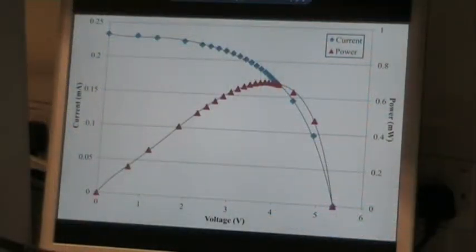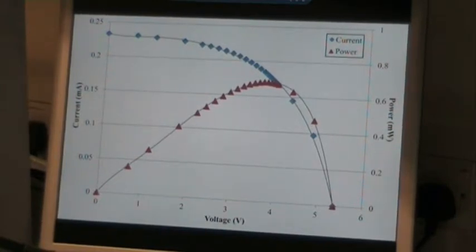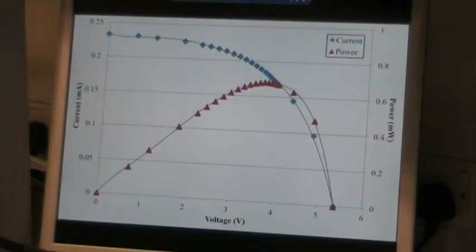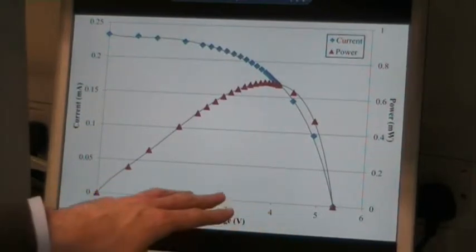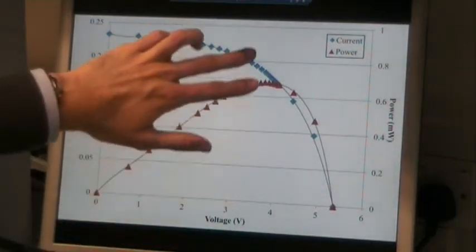One of the properties of solar cells is that the amount of power you can get out of them depends on the voltage that you're operating the cell at. On this graph here, we can see that the maximum power, this red graph, occurs when the voltage of the cell is around 3.5 to 4 volts. This point here is called the maximum power point.